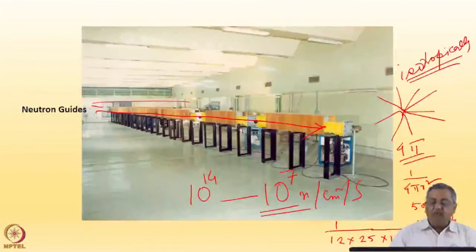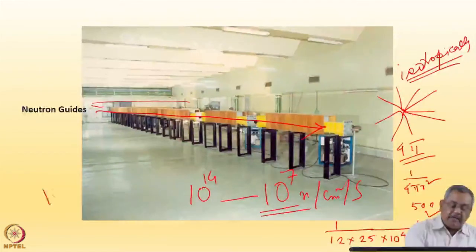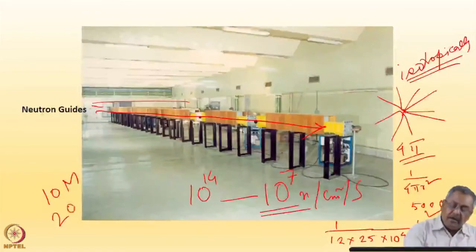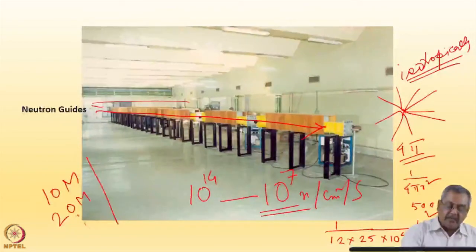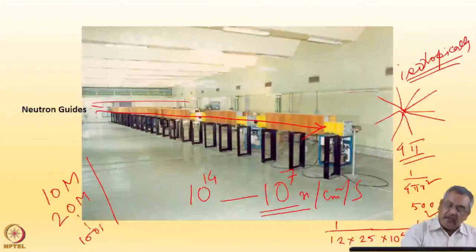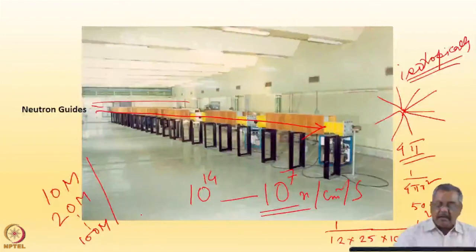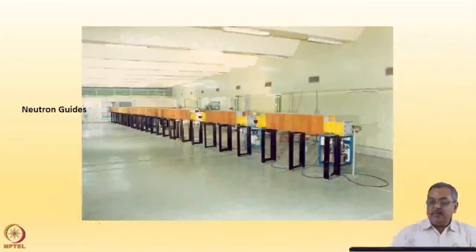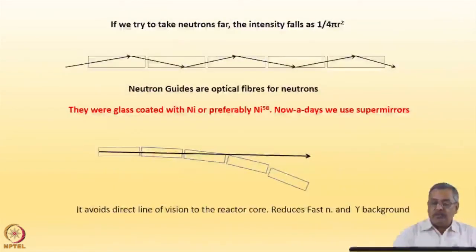How do you take neutrons tens of meters away — 10, 20, 30 or even hundreds of meters? You cannot carry all the neutrons, but some neutrons you can. Let me quickly tell you how.